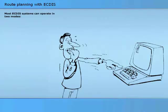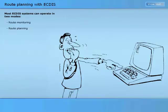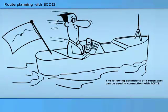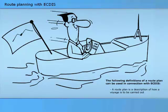Most ECTIS systems can operate in two modes: route monitoring and route planning. When powered up, an ECTIS system will normally automatically start in route monitoring mode and display its own ship's position on the chart. A route plan is a description of how a voyage is to be carried out. The simplest version of a route plan consists of waypoints drawn in the chart.